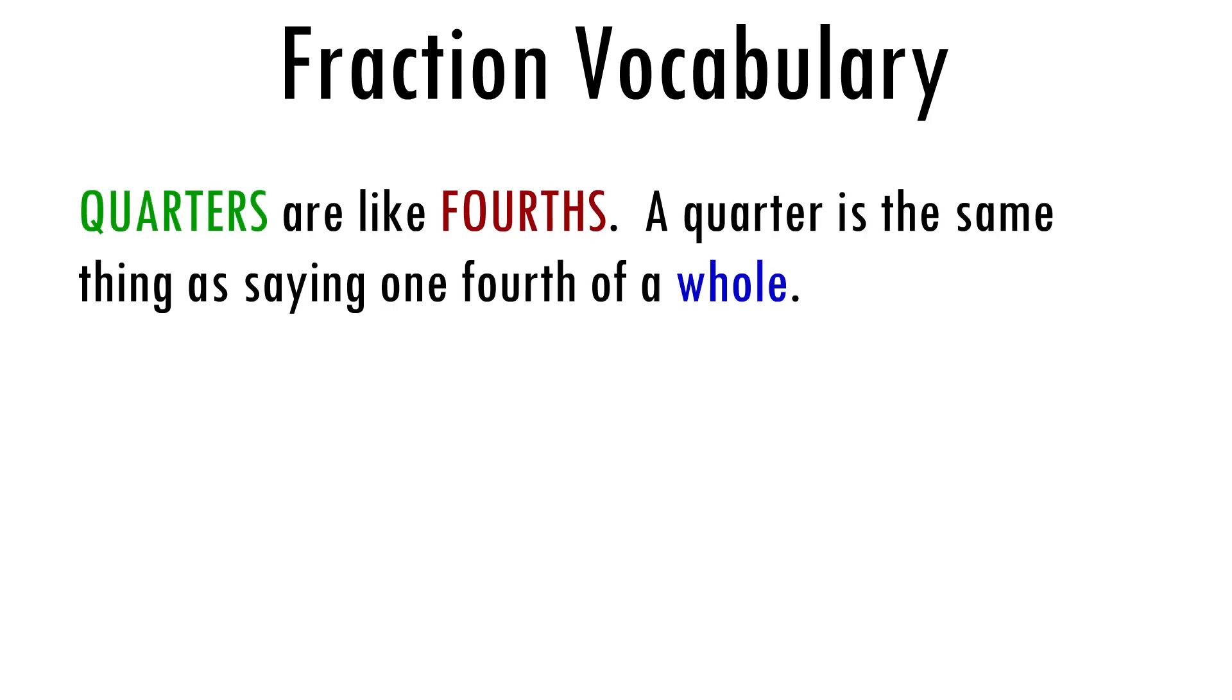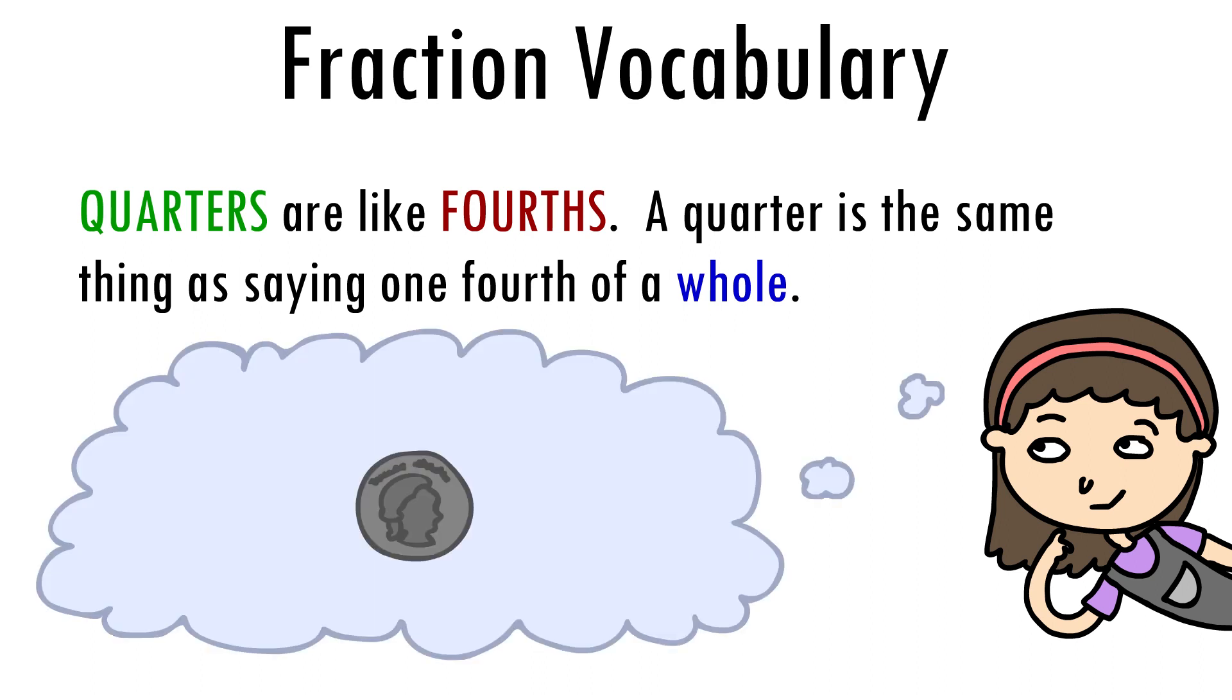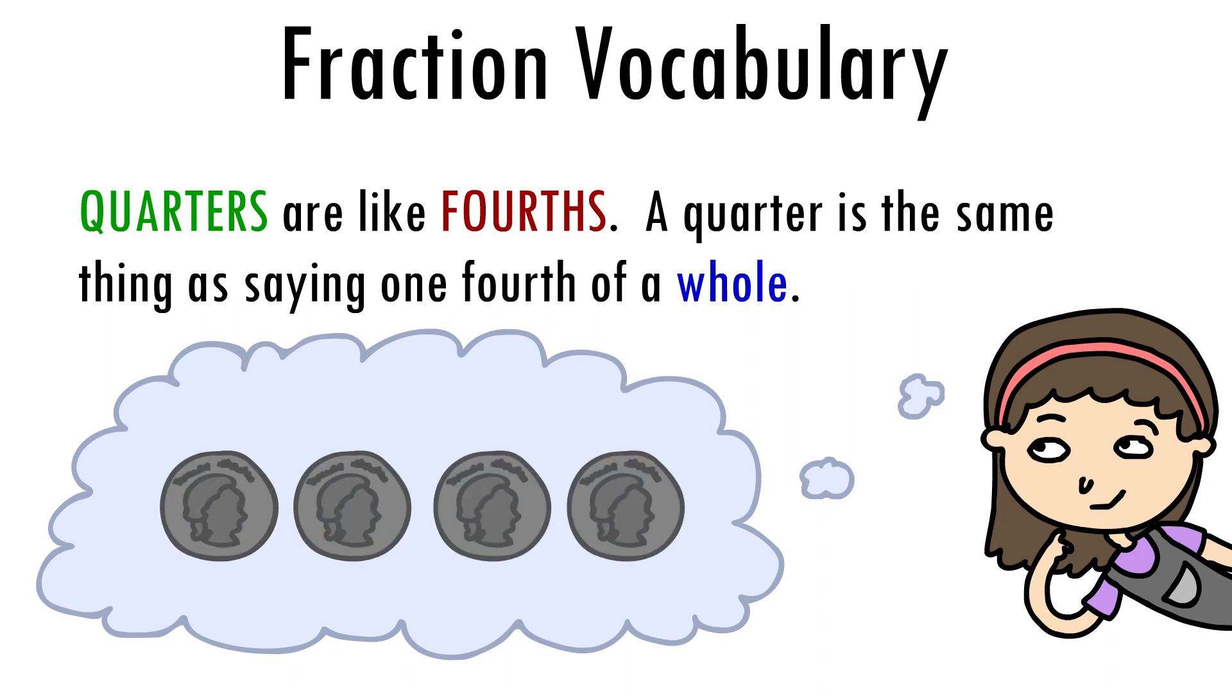When we talk about quarters, we actually mean fourths. A quarter is the same thing as saying one-fourth of a whole. Usually, when we think of a quarter, we think of money, like the coin. The funny thing is, when we talk about money, the coin itself represents a fourth of a dollar. And four coins of equal value add up to a dollar.